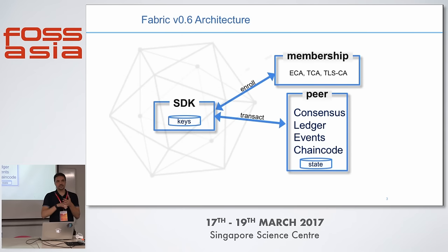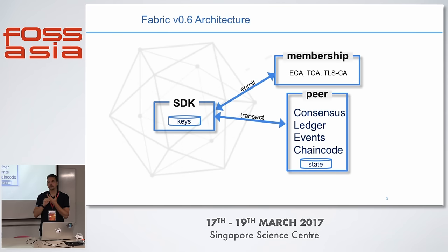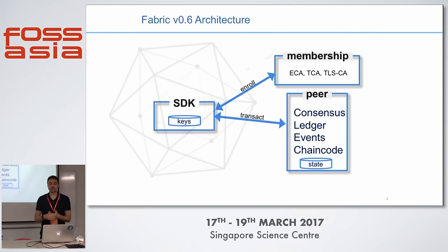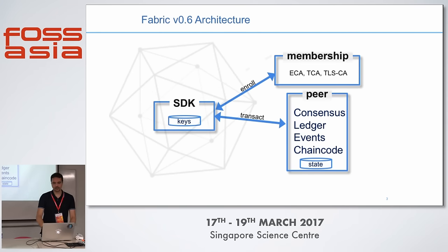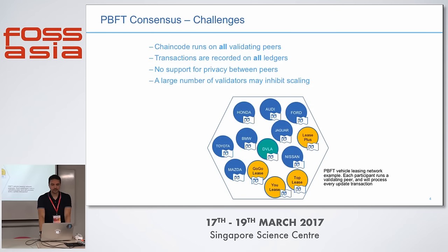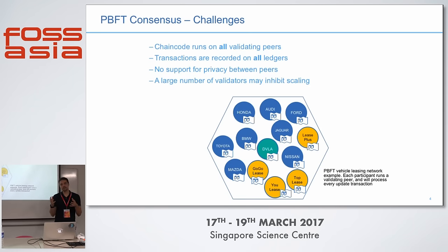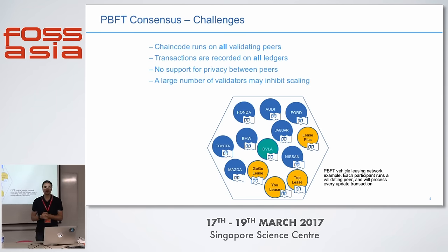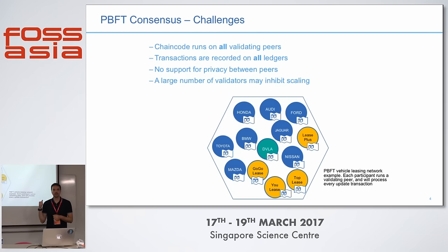The centralization of membership service is one weak point. And as this peer is doing too many things at the same time, the throughput — the number of transactions that we can perform — is quite limited. Other limitations that we found and took into consideration for version 1 include the privacy of transactions.